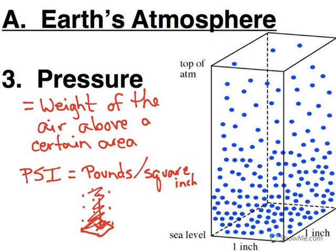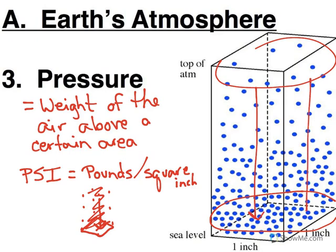And so this picture is showing the same idea. Here we have more air molecules towards the ground, so that's your higher density, fewer up at top. But if you add all of these molecules together and weigh them, that weight pushing down on that square inch is the pressure.